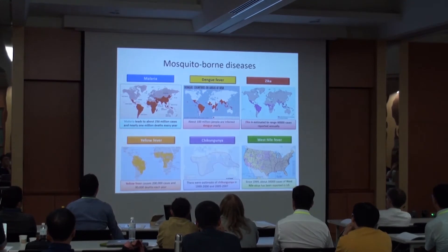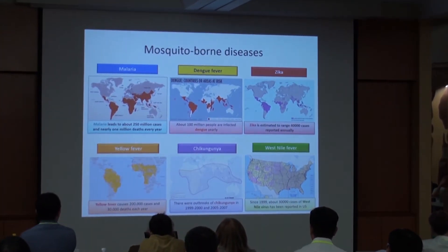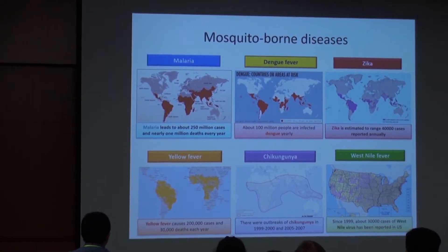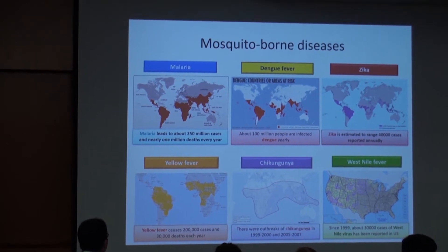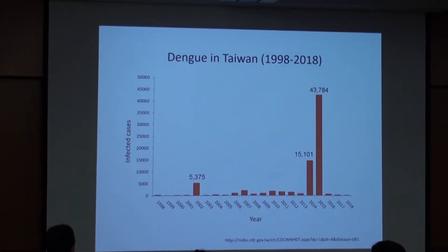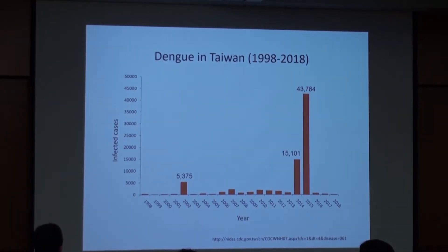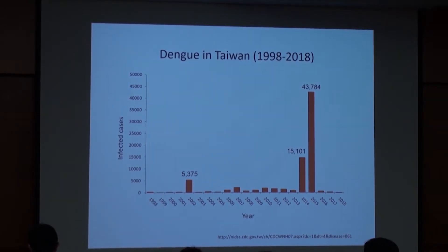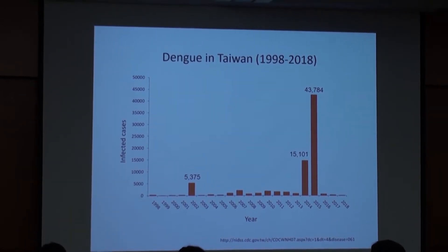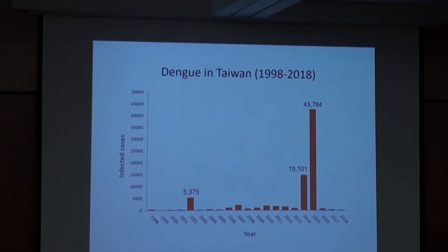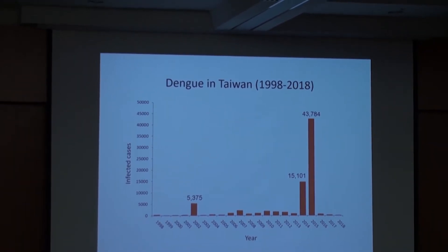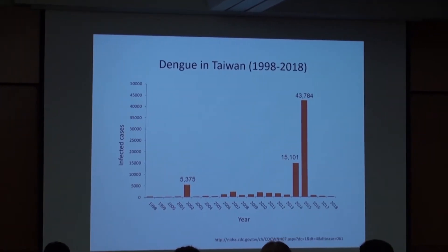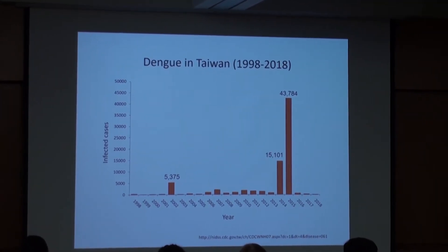As you all know, mosquitoes are responsible for several infectious diseases such as malaria, Dengue, and Zika, and so on. In Taiwan, we encountered several serious Dengue outbreaks in the past two decades, particularly in the years 2014 and 2015.